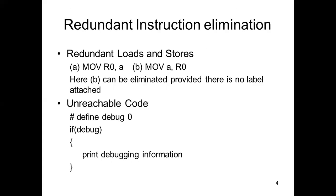Let's see how to eliminate redundant instructions. First, you should know what redundant instructions are. When a particular instruction appears more than once — used twice or thrice — that is called a redundant instruction. So we have to keep only one instruction; the remaining ones will be eliminated.